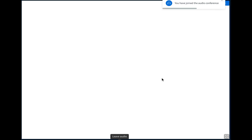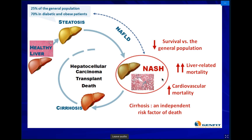This diagram shows what happens in part of the pathology of NASH — there is an increase of fat. When NASH develops, there is a decrease in survival versus the general population. There is increased liver-related mortality, increased cardiovascular mortality, and increased risk of cirrhosis leading to hepatocellular carcinoma, which may sometimes require transplant, otherwise there will be a risk of death.